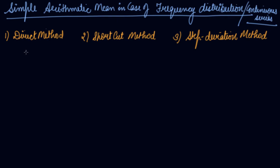We know what continuous series are — they have class intervals like 0 to 10, 10 to 20, 20 to 30, 30 to 40, and so on. In a continuous series, you take the mid-value of each class and treat it as x, the same way we used to take x in discrete series. So in the direct method,